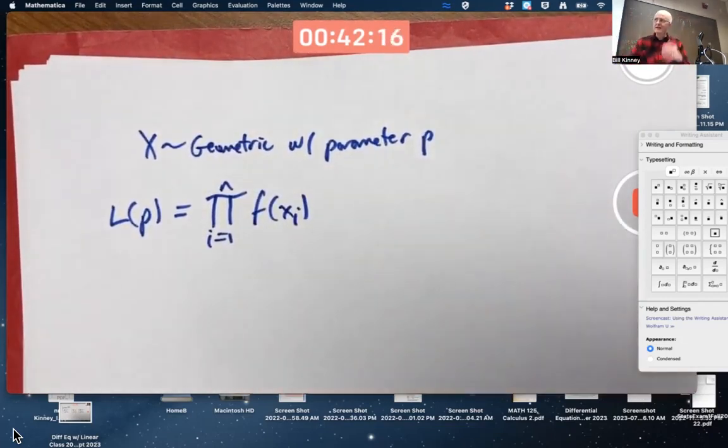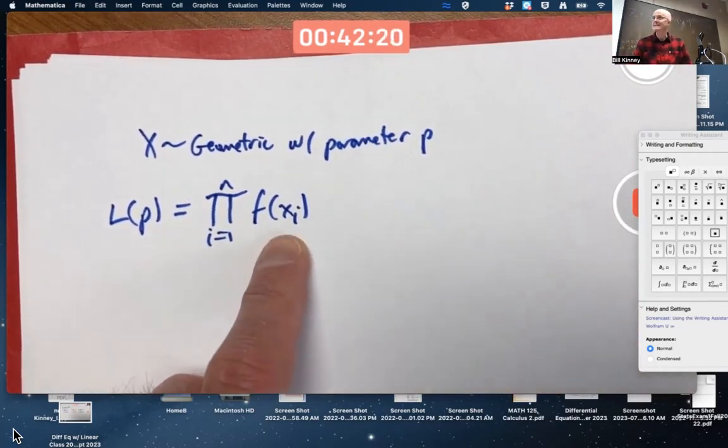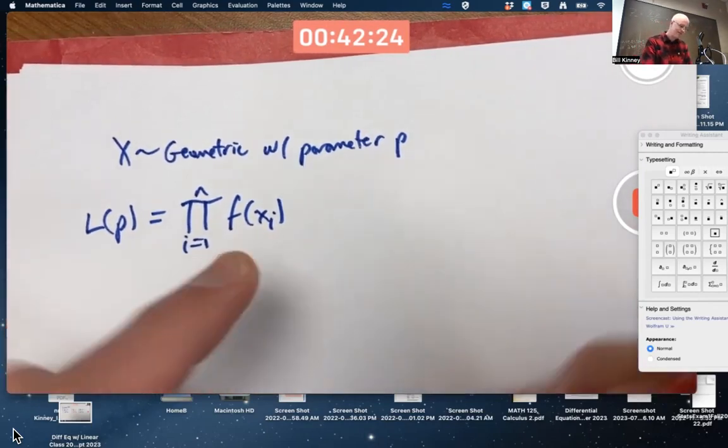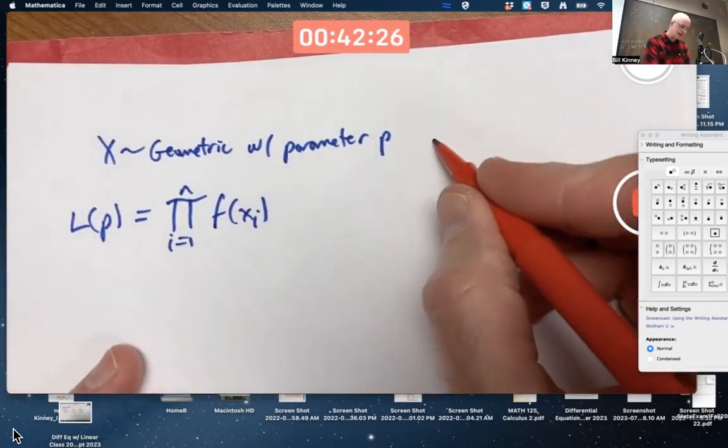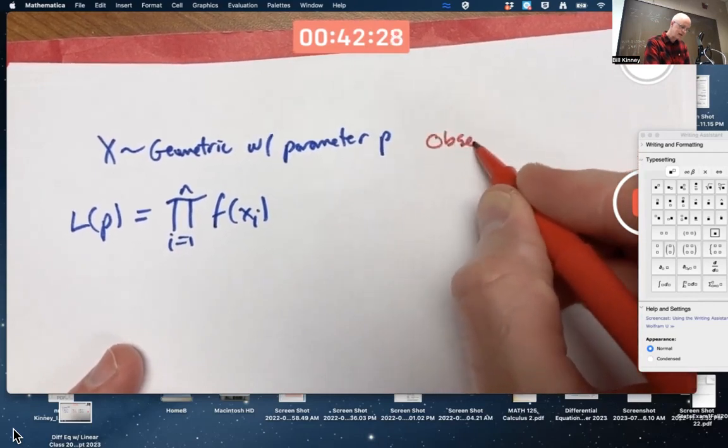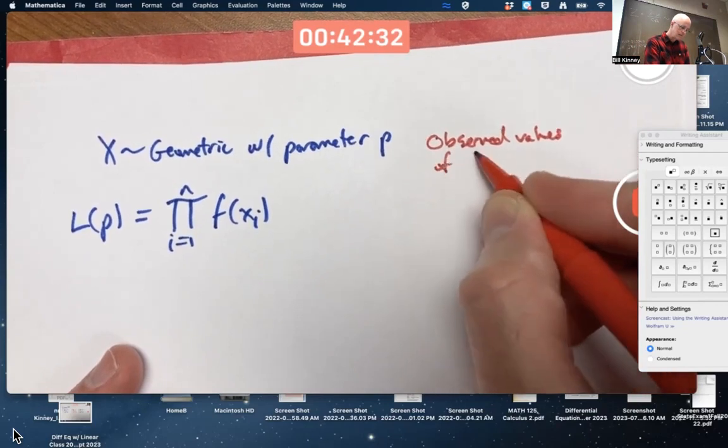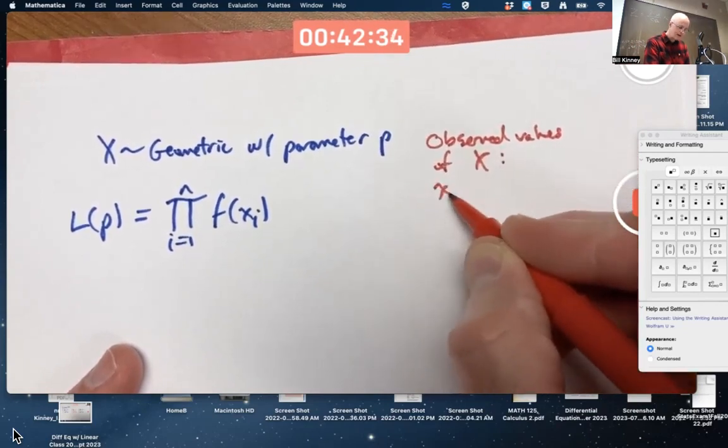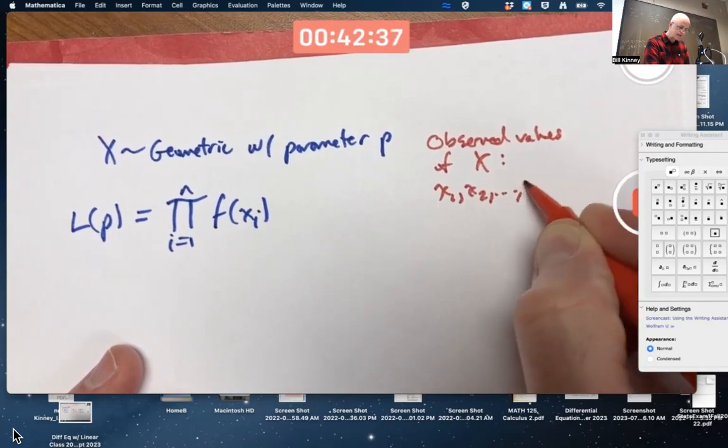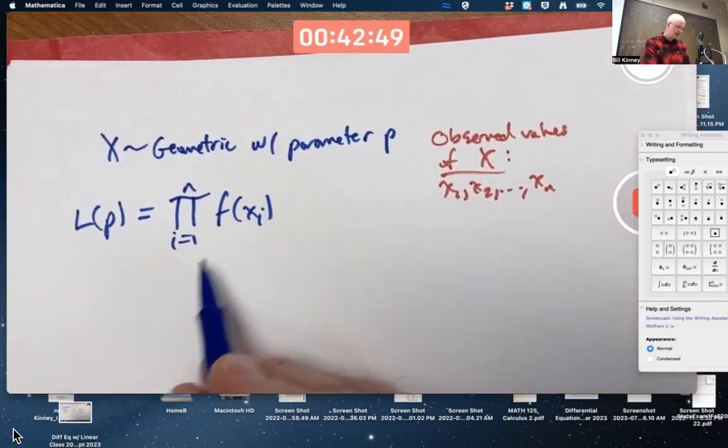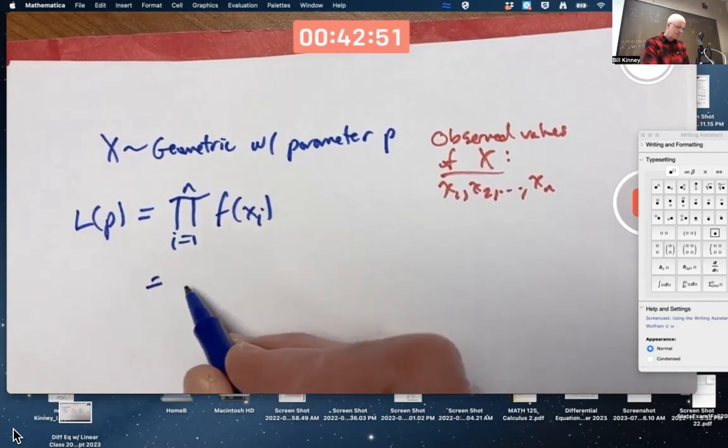What we've got in the background here is we've got some data. Notice these are lowercase x's. Got data, observed values of x. Little x1 through little xn. We've got observed values for a random sample. So I need the PMF of geometric.